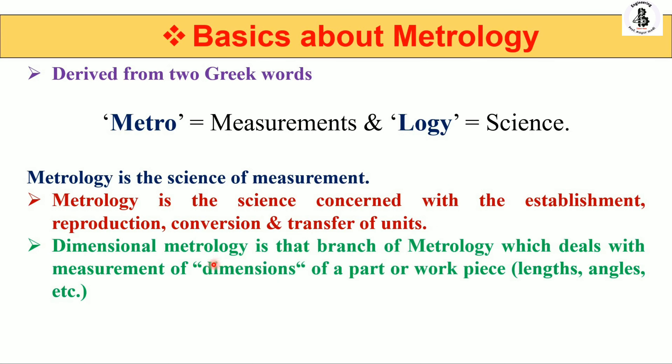Dimensional metrology is that branch of metrology which deals with the measurement of the dimensions of a part or workpiece. That part may be considered as raw material, a work-in-process, or a finished product. In engineering metrology, dimensions such as lengths, angles, etc. are all related with measurement and are included in dimensional metrology.